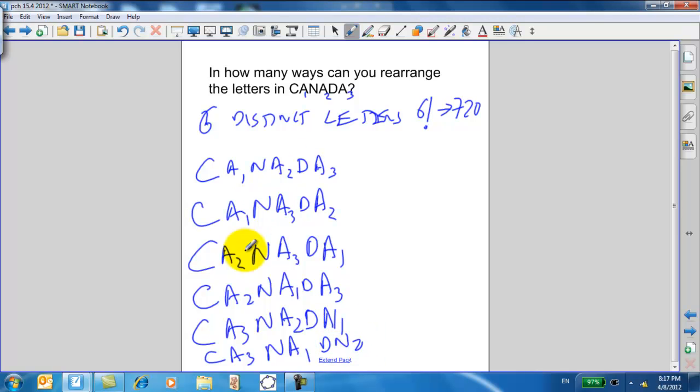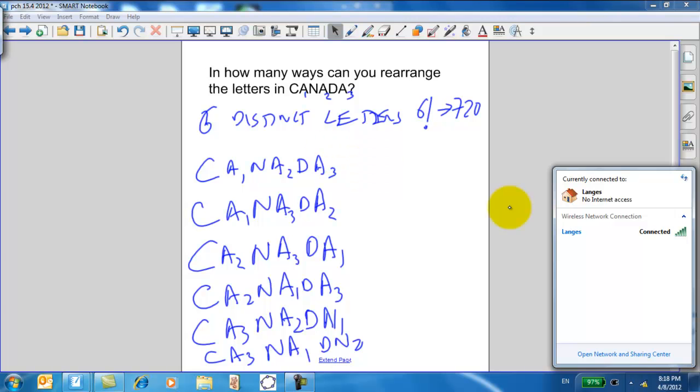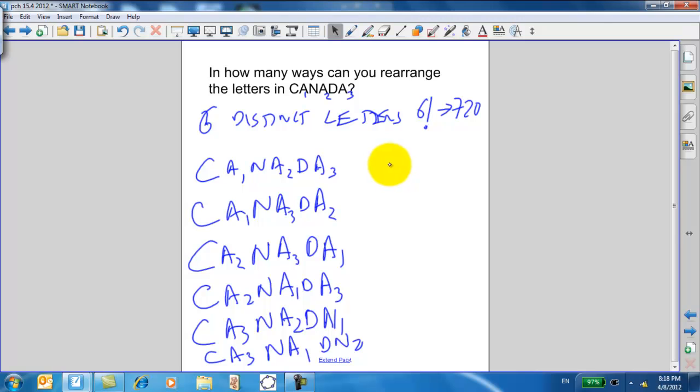Six rearrangements of A1, A2, and A3. So we have to divide those out because now these aren't considered different. So, this is basically just one of the permutations we're looking for. So we're going to take 6 factorial and divide it by 3 factorial, which is all the ways we could rearrange the A1, A2, A3. So 6 factorial over 6 is 5 factorial, which ends up going down to 120. So we only have 120 distinct permutations of Canada.